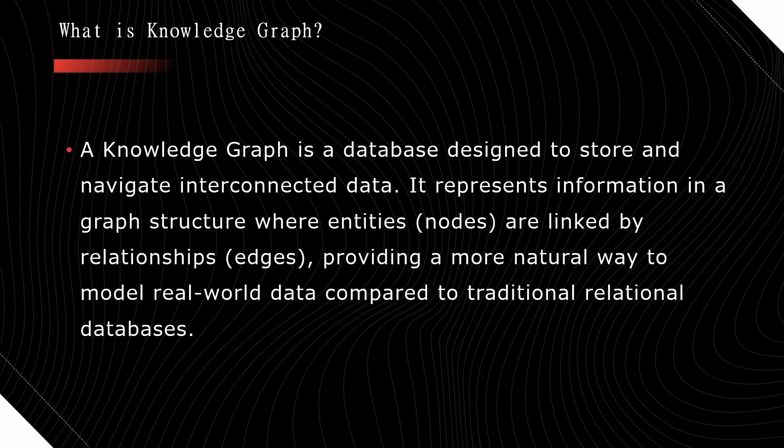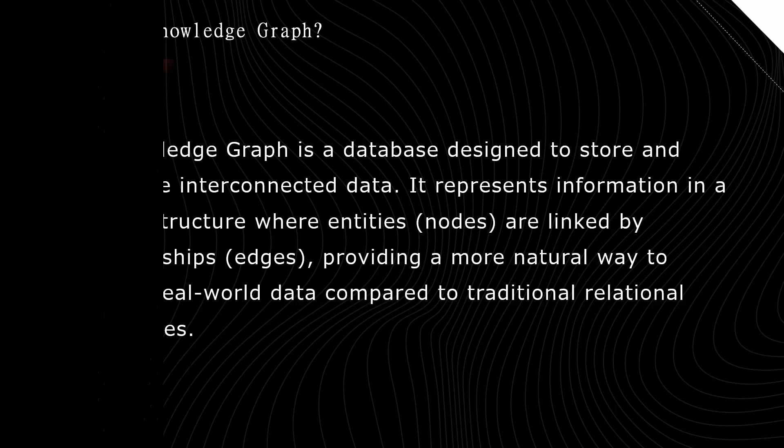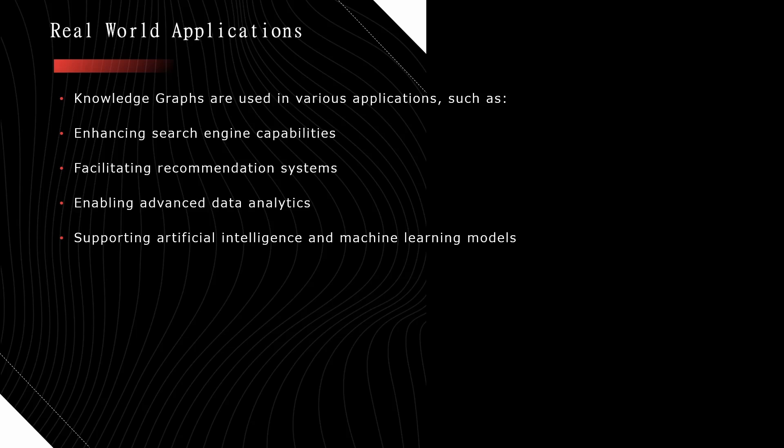In simple terms, imagine two persons — one is Sam and the other one is Harry. Both are entities. The relationship between those persons is 'friends' — Sam and Harry are both friends. So nodes will be the names of those persons and the edges will be the relationship between the nodes.